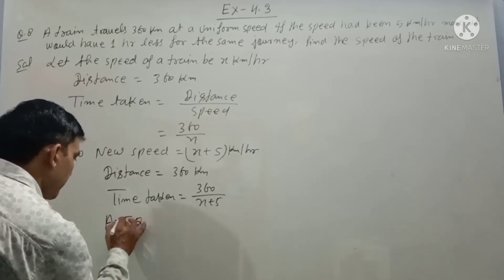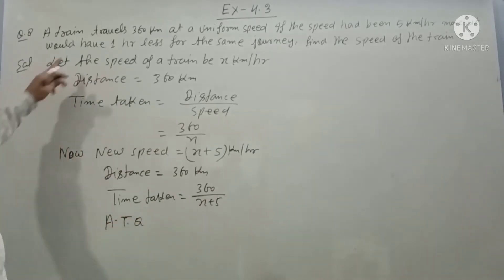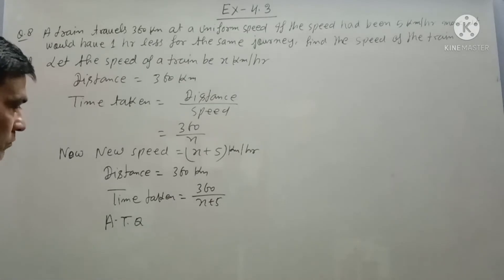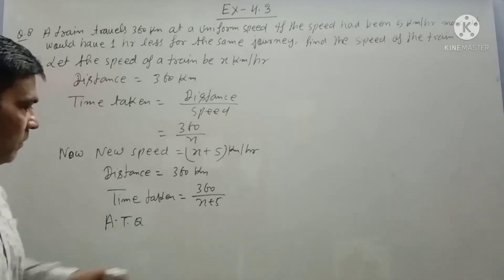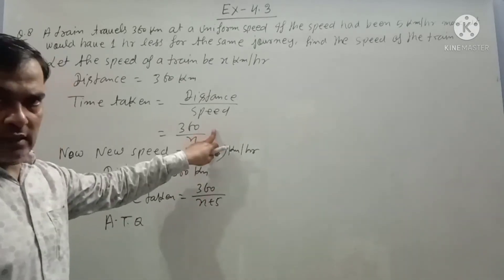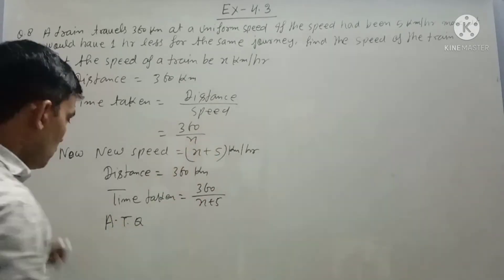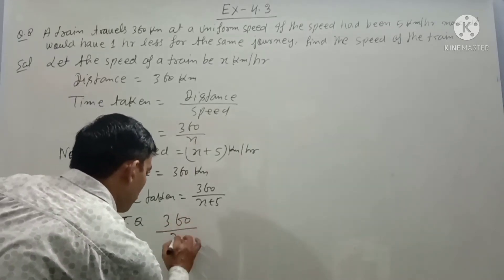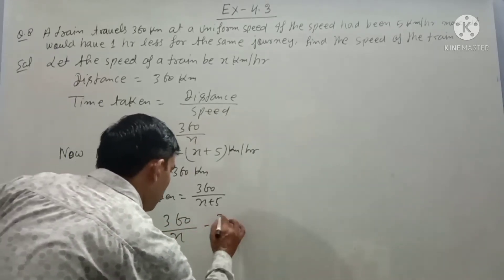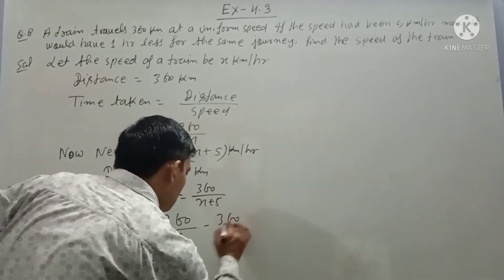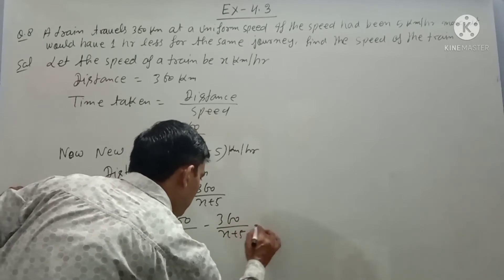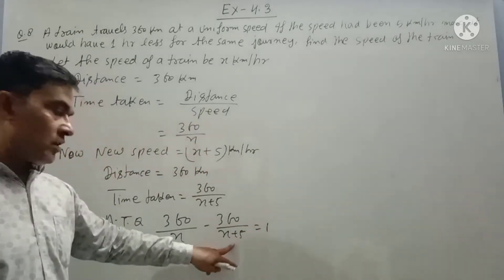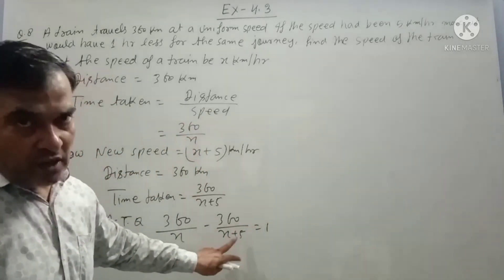Time taken at speed x is 360 upon x. Time taken at speed x plus 5 is 360 upon x plus 5. According to the question, the difference is 1 hour: 360 upon x minus 360 upon x plus 5 is equal to 1.